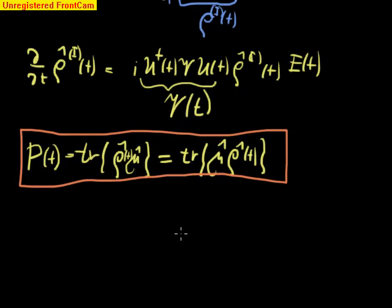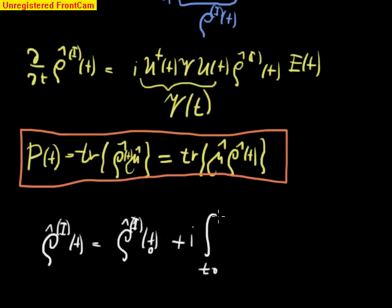Now, so in the next step, we need to solve formally this equation. I will make first step of it and the rest we leave for another video. So we formally solve this equation up here by integrating it. So rho I t is equal to rho I at some starting time t0 plus i, and now we integrate over the whole right hand side. So there is v tau rho I tau e tau.